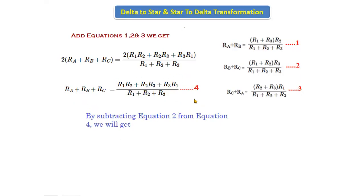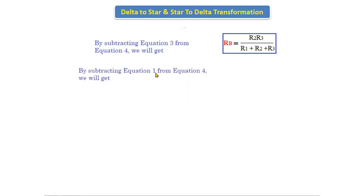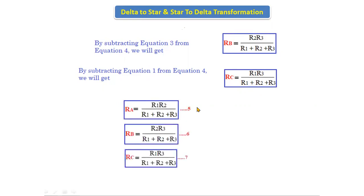Subtracting equation 2 from equation 4 gives: Ra = R1·R2 / (R1 + R2 + R3). Subtracting equation 3 from equation 4 gives: Rb = R2·R3 / (R1 + R2 + R3). Subtracting equation 1 from equation 4 gives: Rc = R1·R3 / (R1 + R2 + R3). These are equations 5, 6, and 7 — the final delta-to-star formulas.